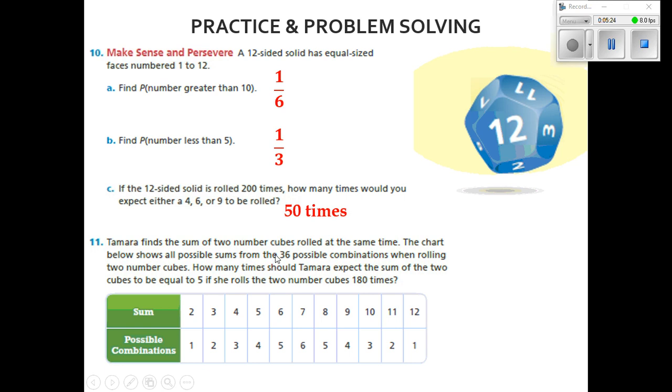Tamara finds the sum of two number cubes rolled at the same time. Notice it said cubes, which means six sides. The chart below shows all possible sums from the 36 possible combinations when rolling two number cubes. How many times should Tamara expect the sum of the two cubes to be equal to 5 if she rolls the two number cubes 180 times? Well, we should expect it to be about 20 times.